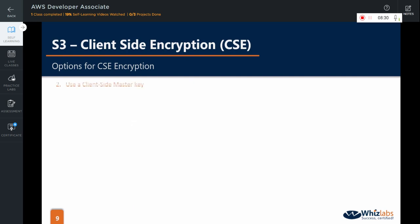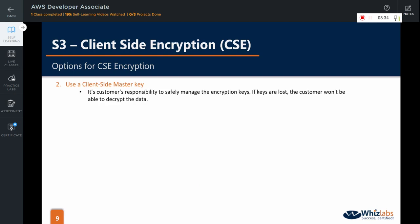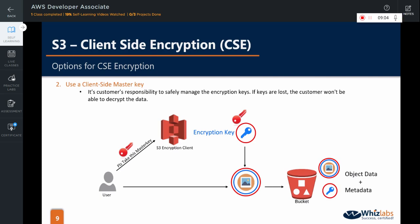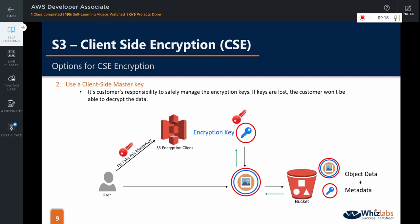The second client-side option is to use a client-side master key. In this case, it is the customer who is in charge of managing the encryption keys. If the keys are lost, the customer will not be able to decrypt the data. For uploading, the customer provides the master key to the Amazon S3 encryption client. The S3 encryption client generates the encryption key, encrypts that key with the customer-provided master key, encrypts the data, and saves the material description as part of the object's metadata. The client then uploads the encrypted data and the encrypted key as object metadata to S3. While downloading, the S3 encryption client downloads the encrypted object, uses the client-provided master key to decrypt the encryption key, and then decrypts the data using that data key.